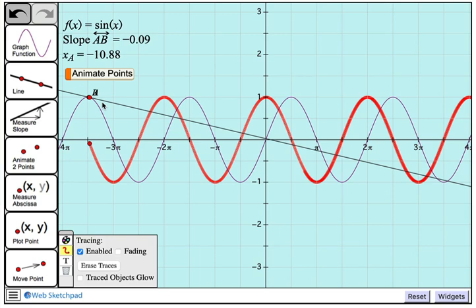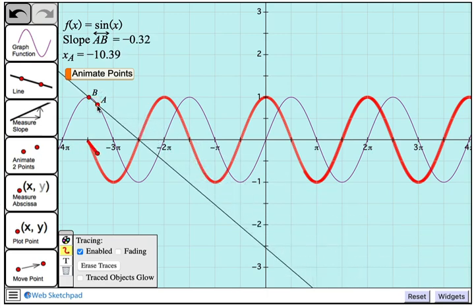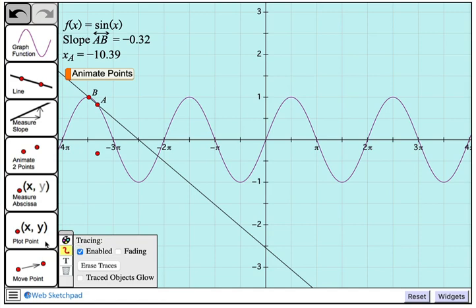And maybe the best approximation of all if points A and B coincided. Well, I can't drag these to be at the exact same location, but one thing I can do, and let me just erase traces here, is I can create a movement button to move these two points to the exact same location.